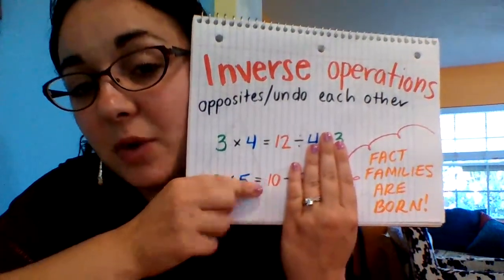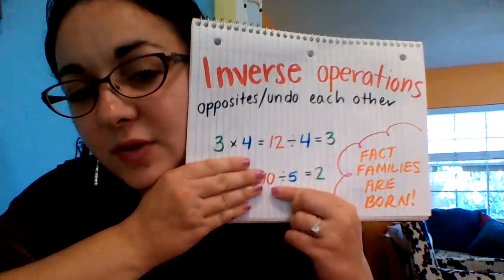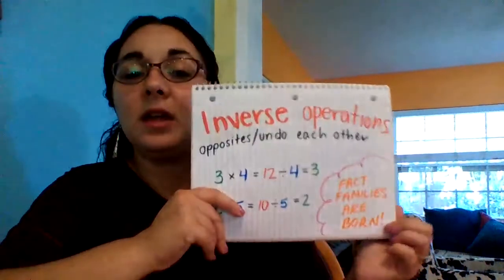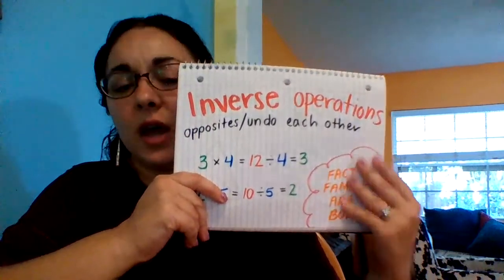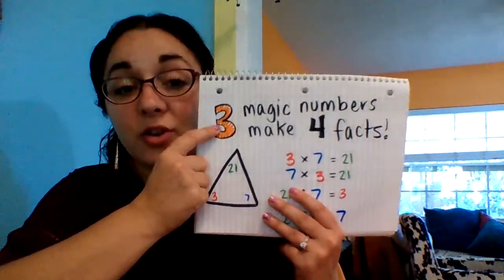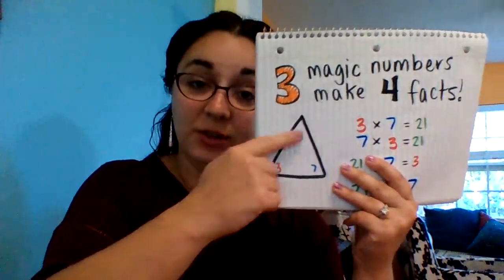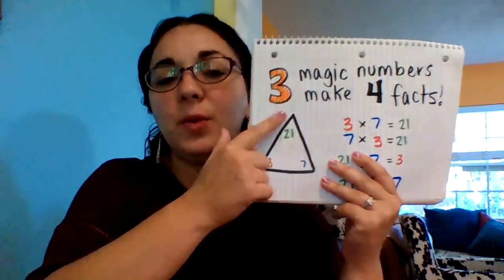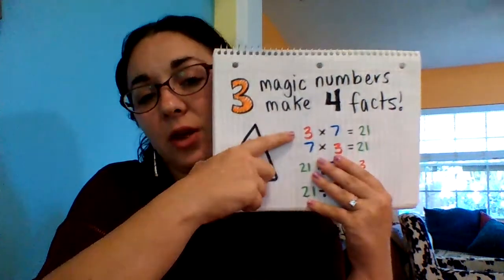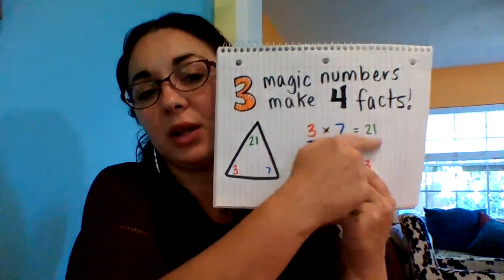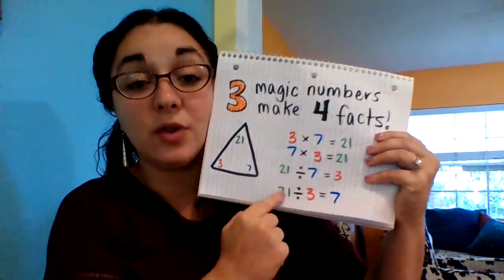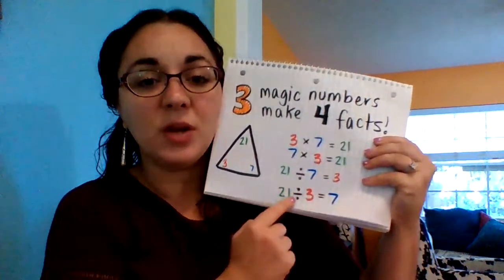We're taking 2 times 5 equals 10 and putting the 10 at the front of a division problem, still using the numbers 5 and 2: 10 divided by 5 equals 2. This is where fact families are born. A fact family is 3 magic numbers that make 4 facts. In class you might have seen these 3 numbers in a triangle, with the biggest number on top. We can write 4 facts: 3 times 7 and 7 times 3 both equal 21, then 21 divided by 7 equals 3, and 21 divided by 3 equals 7.